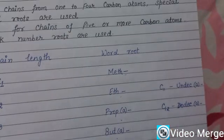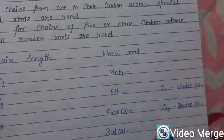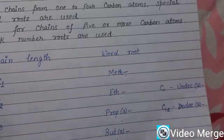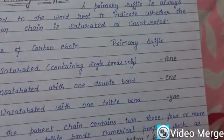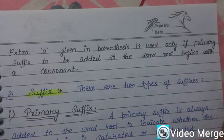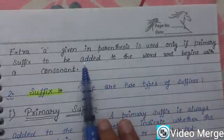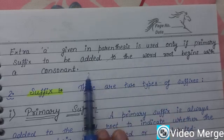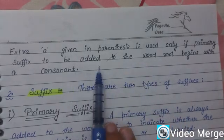For seven carbon atoms, we use 'hept.' For eight, we use 'oct.' For nine, we use 'non.' For ten, we use 'dec.' For eleven, we use 'undec.' For twelve, we use 'dodec.' An extra 'a' shown in parentheses is used only if the primary suffix to be added to the word root begins with a consonant, which we will discuss later.